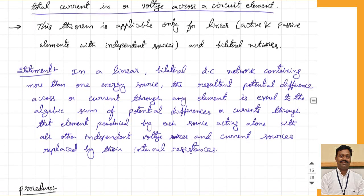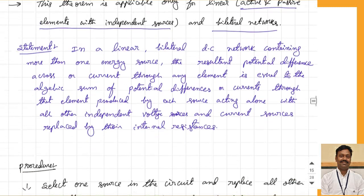This theorem is applicable only for linear networks — linear means active and passive elements with independent sources. This is only applicable if your circuit contains only active and passive elements with independent sources. If there are dependent sources, you cannot apply the superposition theorem; you have to go for other theorems. Superposition theorem cannot be applied if there are dependent sources or non-linear elements in the circuit, and it is applicable only for bilateral networks.